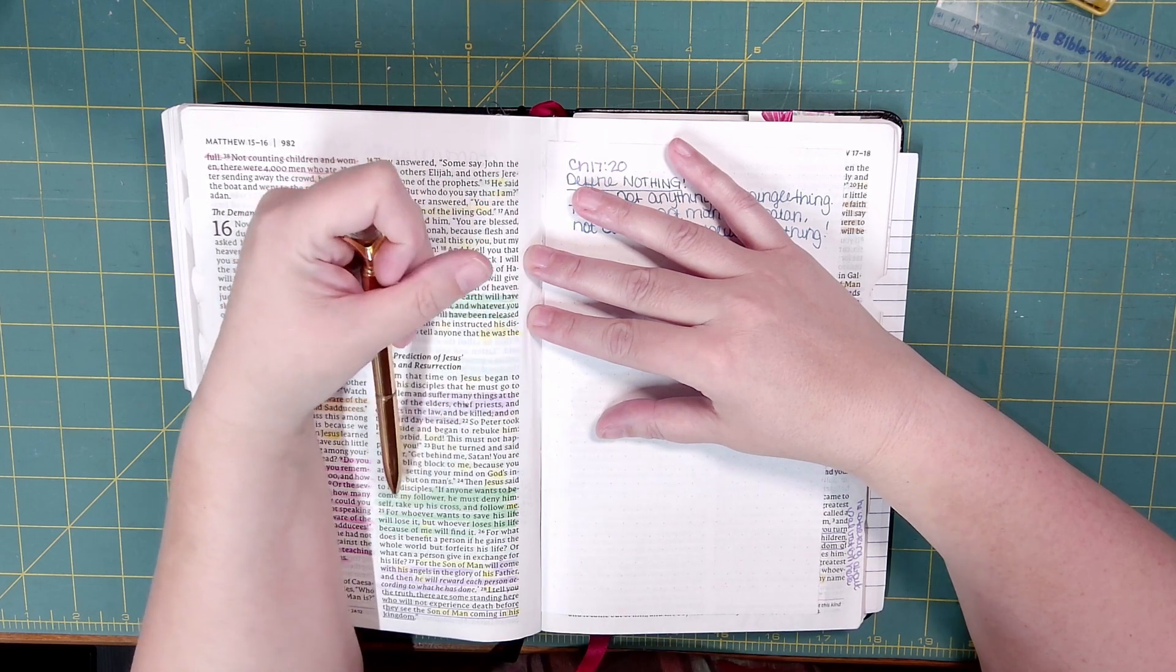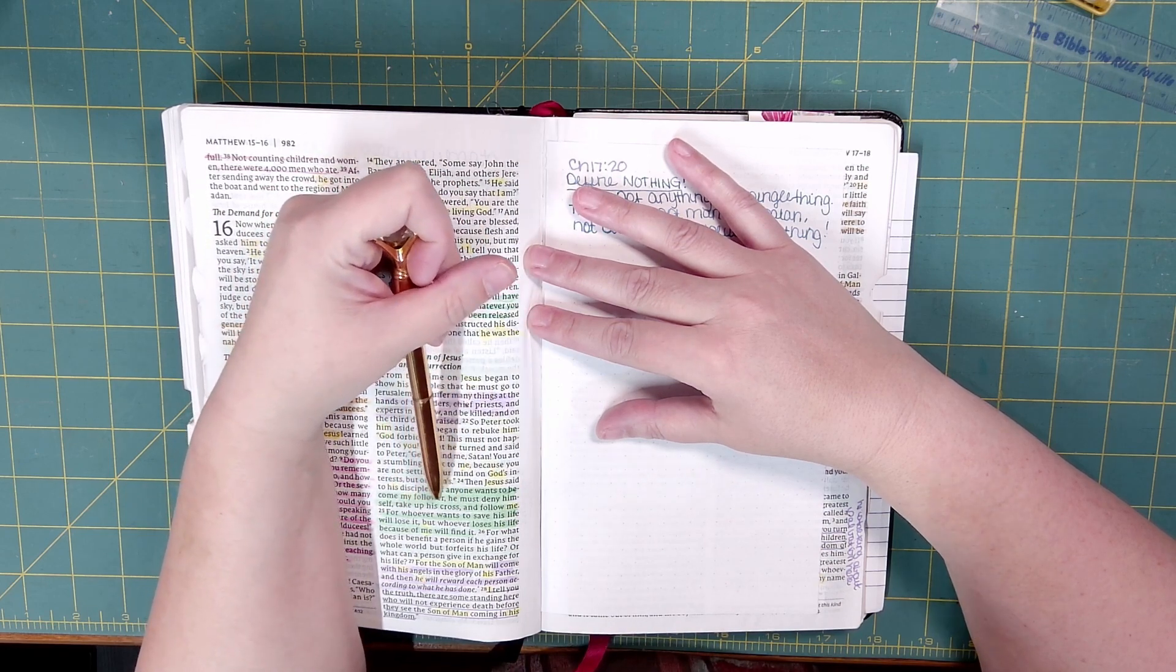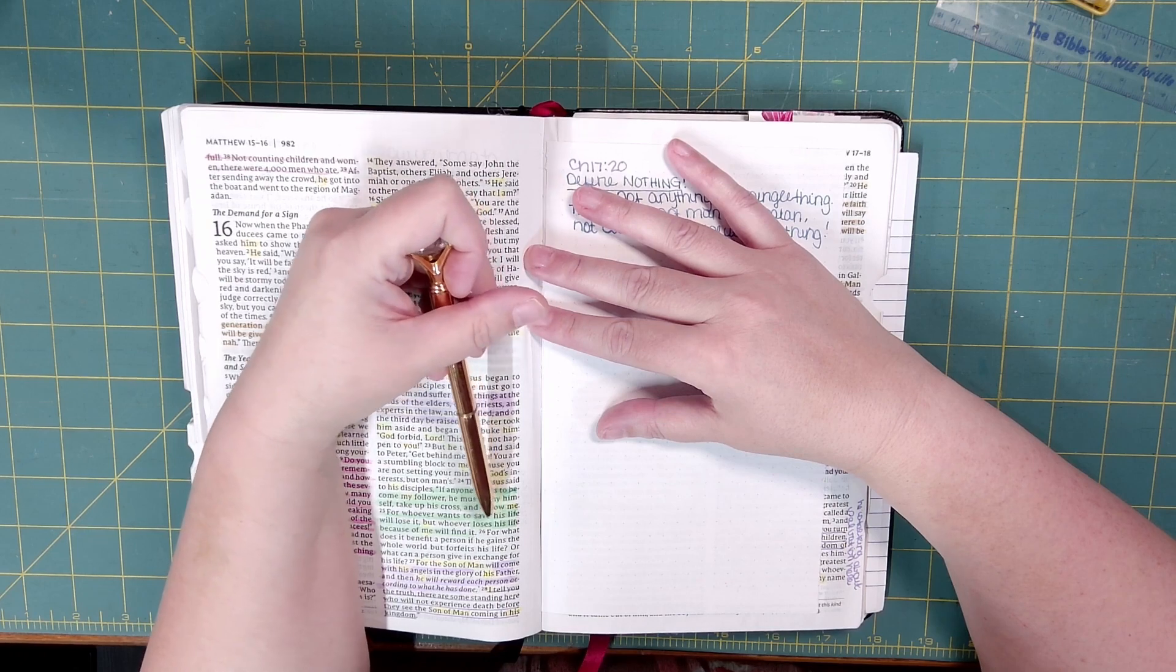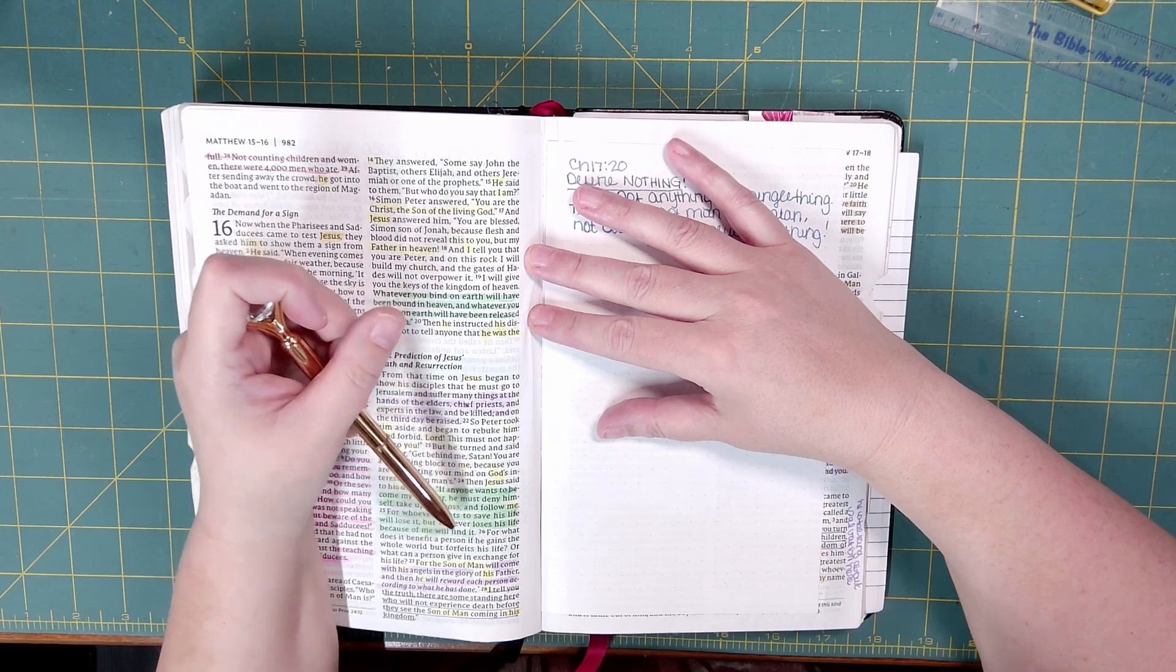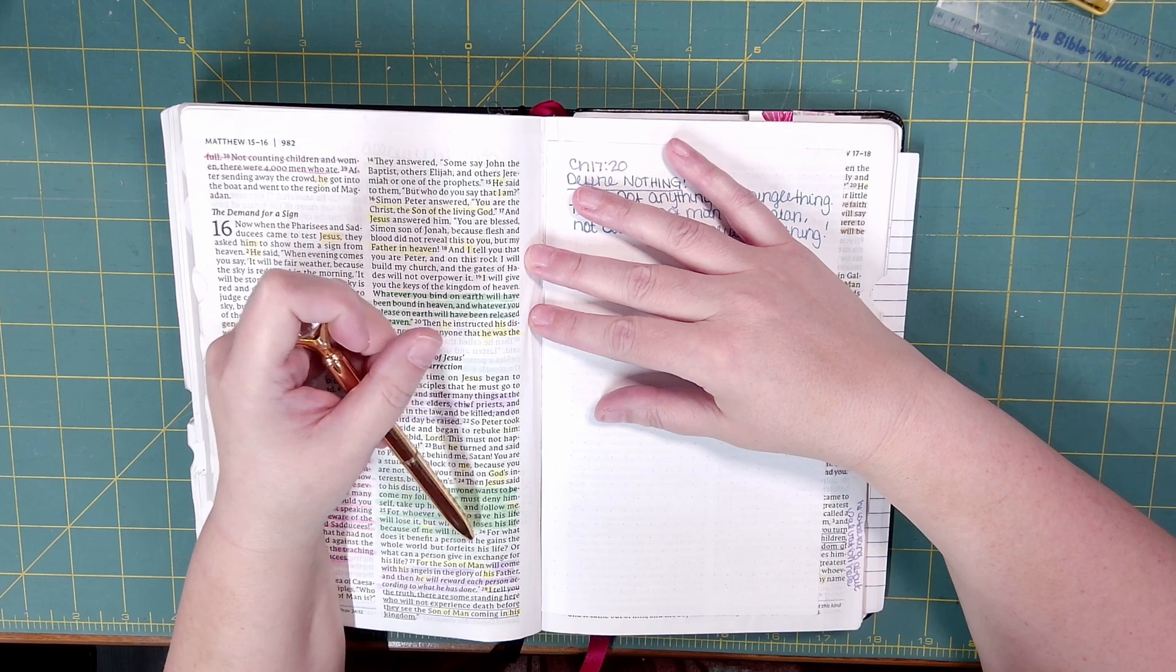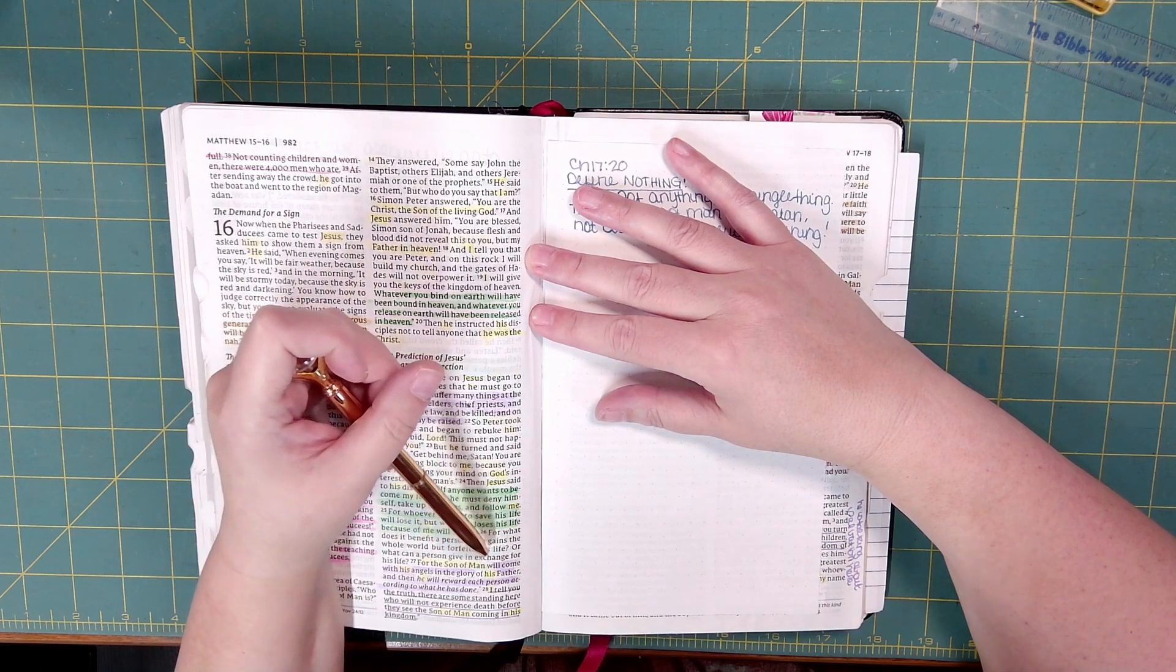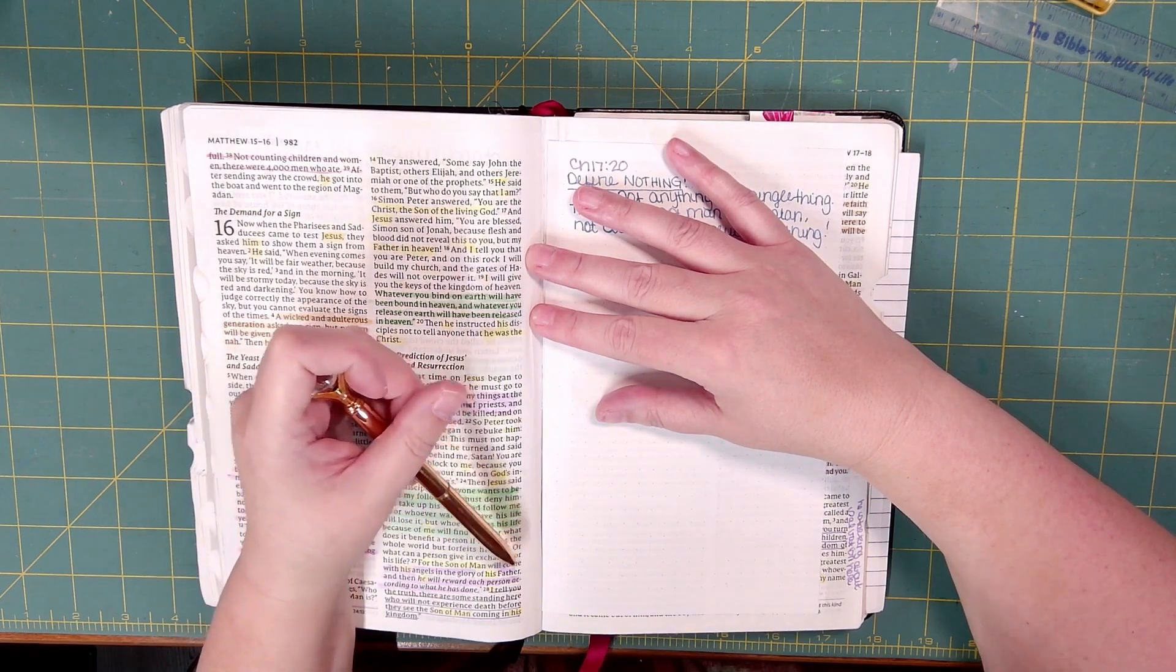Then Jesus said to his disciples, If anyone wants to become my follower, he must deny himself, take up his cross, and follow me. For whoever wants to save his life will lose it. But whoever loses his life because of me will find it. For what does it benefit a person if he gains the whole world but forfeits his life? Or what can a person give in exchange for his life?